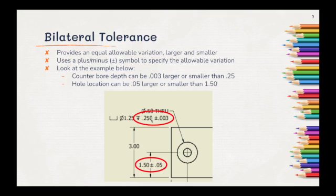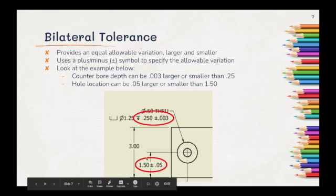You can see the first measurement right here. 0.25 is our base measurement and we can be plus 0.003 or minus 0.003. That means that we could actually be 0.253 and it would still be an acceptable value. Same thing down here. We have 1.5 plus or minus 0.05. That means that we could be 1.5 plus 0.05 or 1.5 minus 0.05 and still be in an acceptable range.